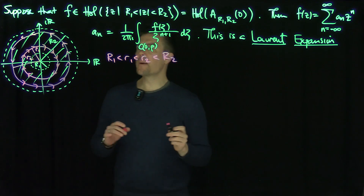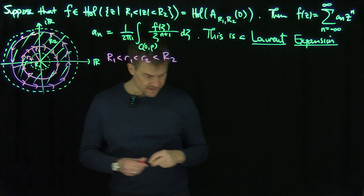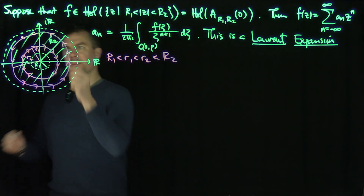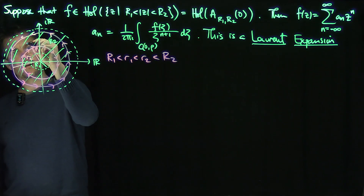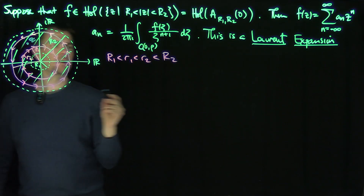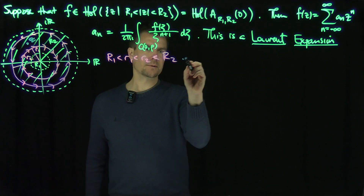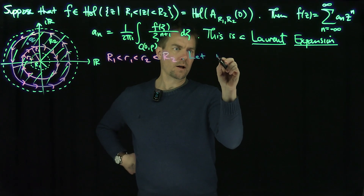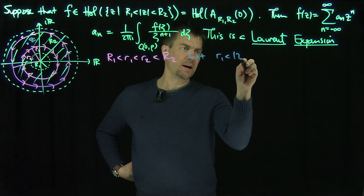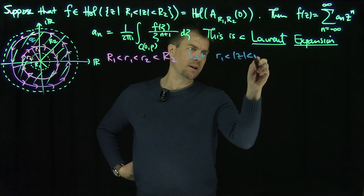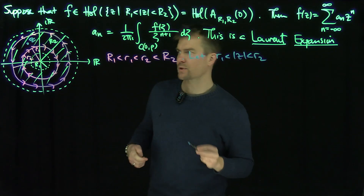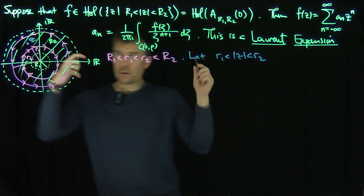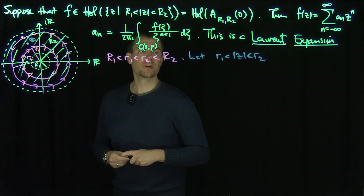And now I'm going to fix a point Z inside the annulus, in between r1 and r2. So here's a complex point Z. We let little r1 < |Z| < little r2, so that puts Z squarely inside this region, inside the larger annulus.